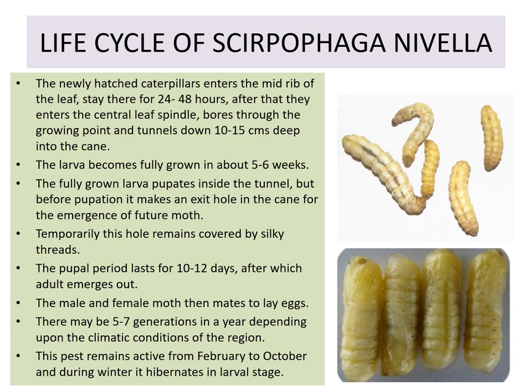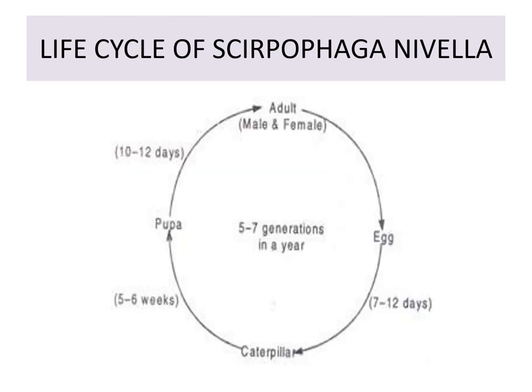There may be 5 to 7 generations in a year depending upon the climatic conditions of the region. This pest remains active from February to October, and during winter it hibernates in the larval stage.